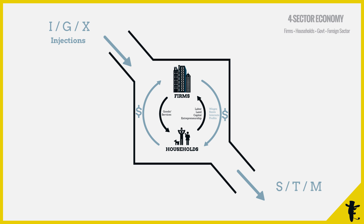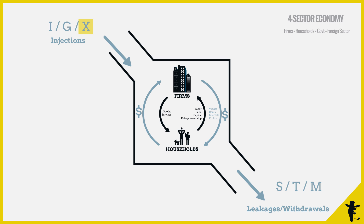Savings, taxes, and import spending are called leakages or withdrawals, because money leaks out of the system. And injections and leakages are sort of related: investments come from savings, government spending comes from taxes, and America makes money from foreigners by exporting — but foreigners also make money from America when America imports. No wonder it's called the circular flow of income.